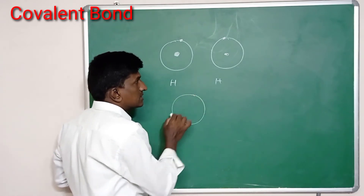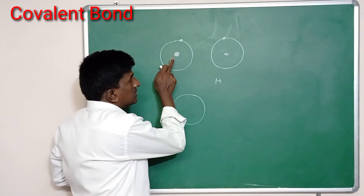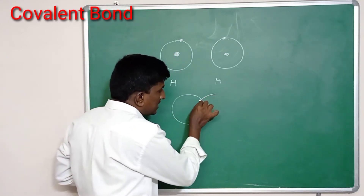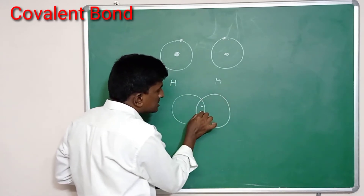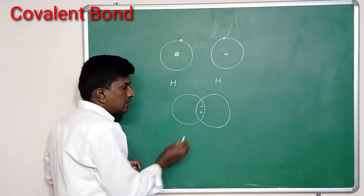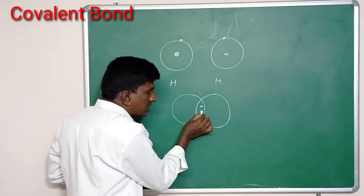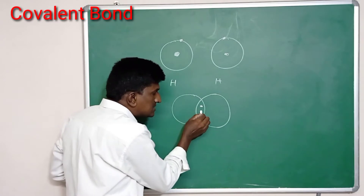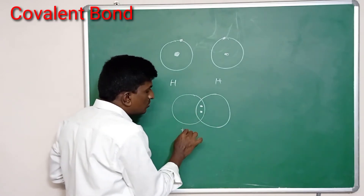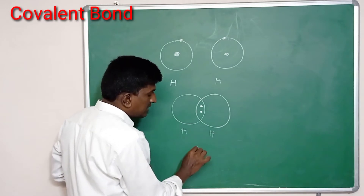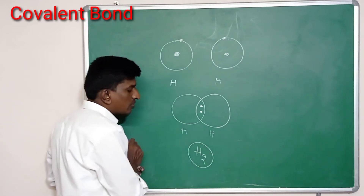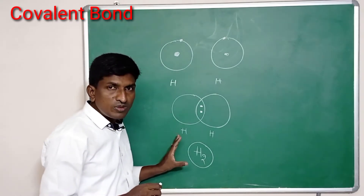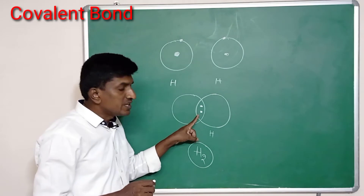Then how is the bond formed between these two hydrogens? The bond is formed due to mutual sharing of electrons by the two hydrogen atoms. The first hydrogen contributes one electron and the second hydrogen also contributes one electron. A pair of electrons is formed and this pair is mutually shared by these two hydrogens, forming the molecule of hydrogen gas.